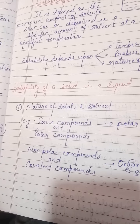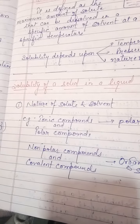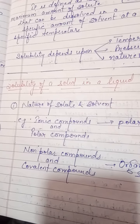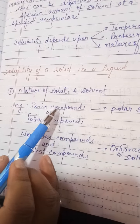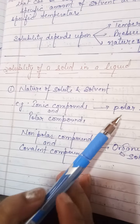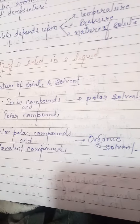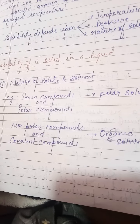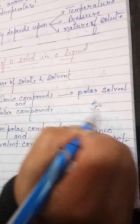If the solute and solvent are of the same nature, they will dissolve in each other. If I talk about ionic compounds — they are polar — then they will dissolve in polar solvents. If there are covalent compounds of polar nature, they will also dissolve in polar solvents.